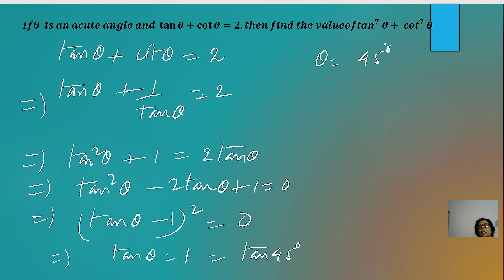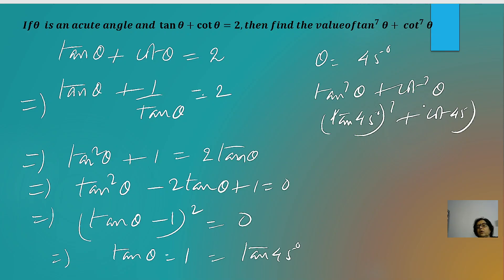Taking the expression tan⁷θ + cot⁷θ with θ = 45°: this becomes (tan 45°)⁷ + (cot 45°)⁷ = 1⁷ + 1⁷ = 1 + 1 = 2. Note that 1 raised to any power is 1, so regardless of the index, whenever tan θ + cot θ = 2, the answer is always 2.